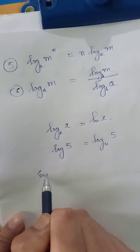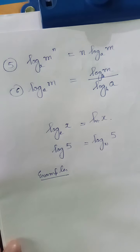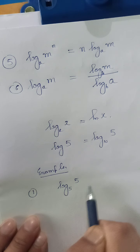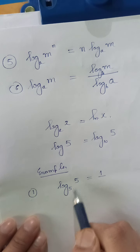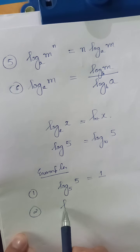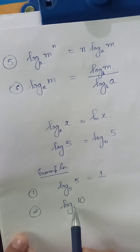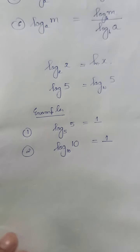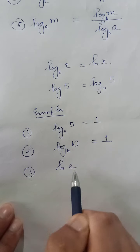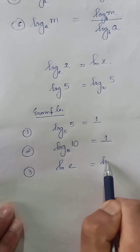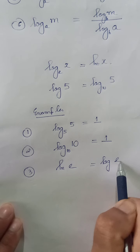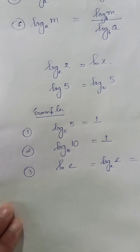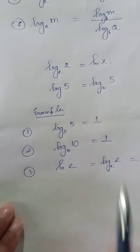Now let us see some examples on the rules we have studied. Example 1: log of 5 with base 5 is equal to 1. Example 2: log of 10 with the same base 10 is also equal to 1. Example 3: ln of e means log of e with base e, which is also equal to 1. Log of any number with the same base is always equal to 1.